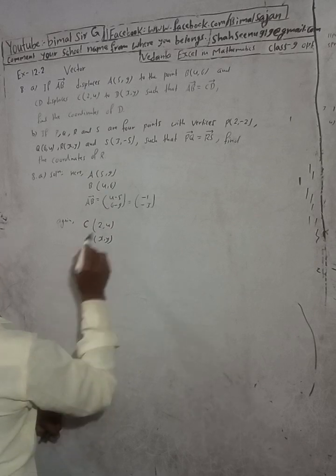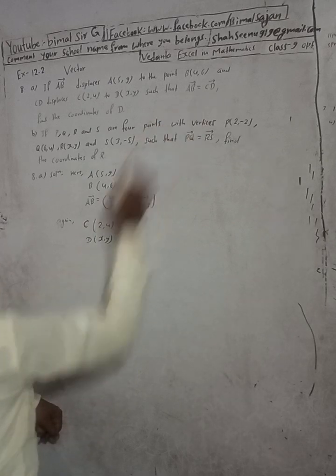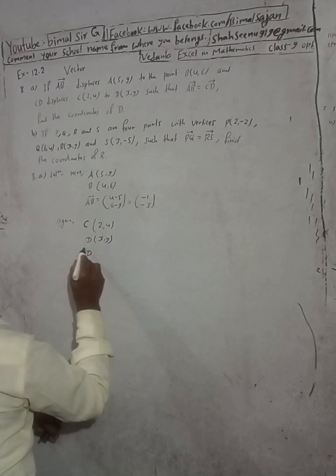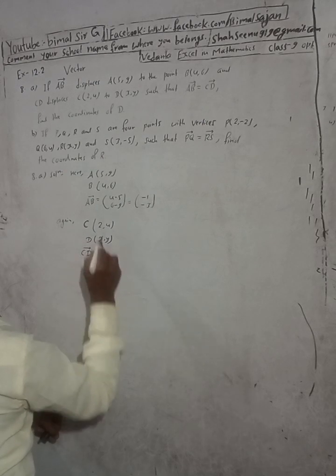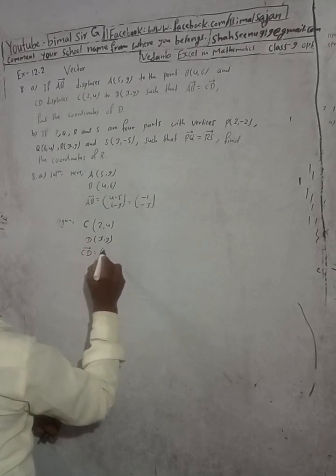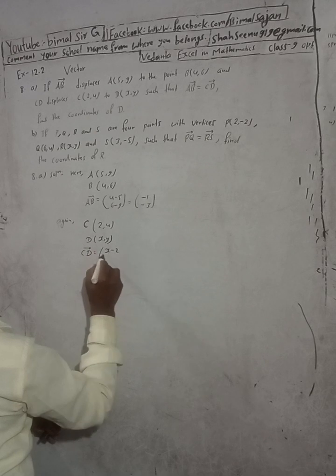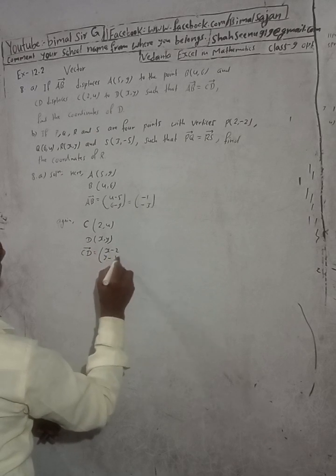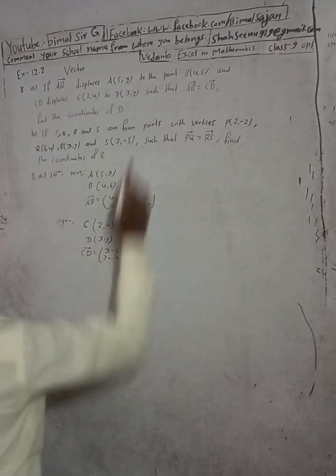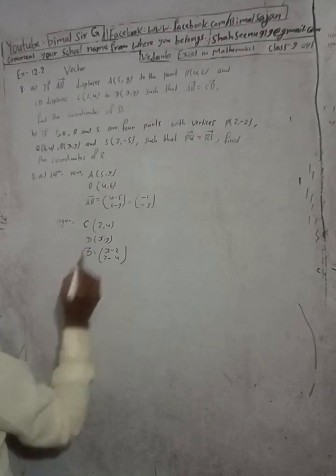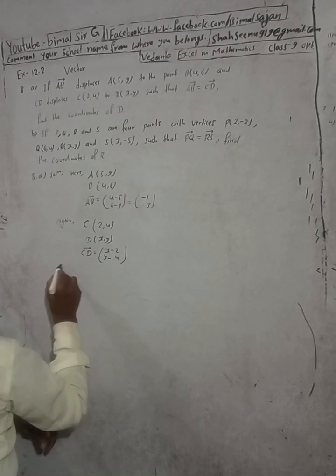CD vector: the final CD vector is equal to (x minus 2) and (y minus 4). This is the CD vector, as given.